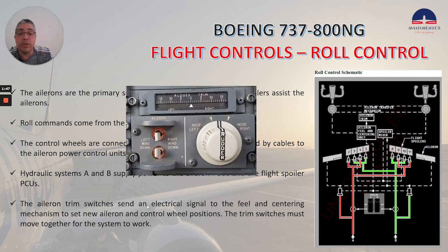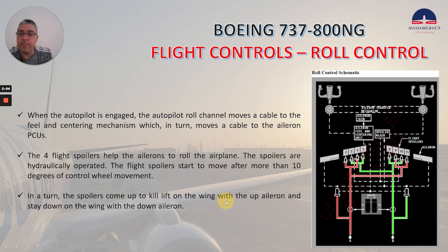The aileron trim switches send an electrical signal to the feel and centering mechanism to set new aileron and control wheel positions. The trim switches must be moved together for the system to work. When the autopilot is engaged, the autopilot roll channel moves a cable to the feel and centering mechanism, which in turn moves a cable to the aileron PCUs.